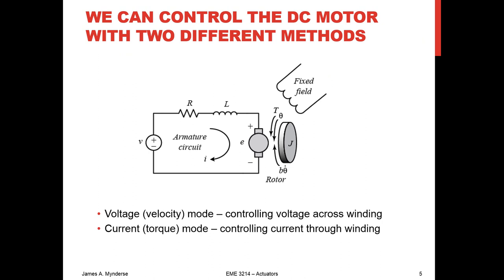We can control the motor in two different ways — by controlling either the voltage or the current. If we control the voltage, we get velocity control, or speed control. If we control the current, we control the torque. So controlling current through the windings gives us torque control. Mostly what we're going to look at in this class is speed control, though there are two options.